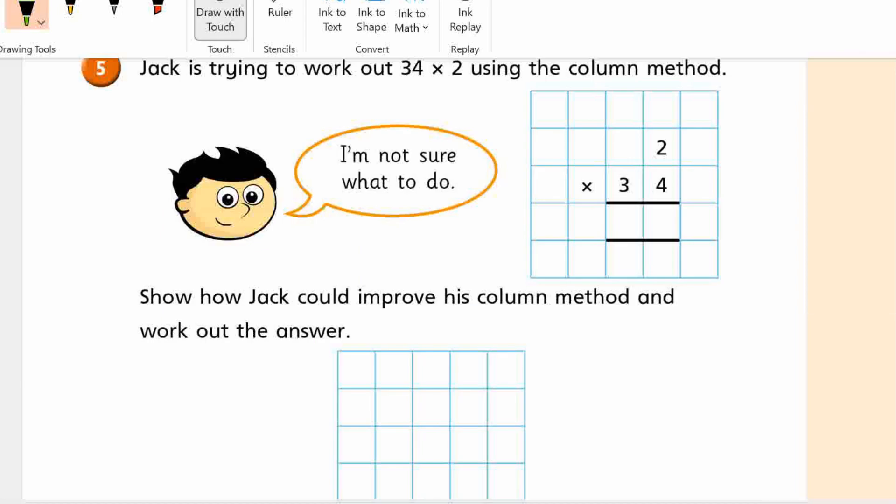So Jack is trying to work out 34 times 2 using the column method. I'm not sure what to do. Show Jack. Show how Jack could improve his column method and work out the answer.